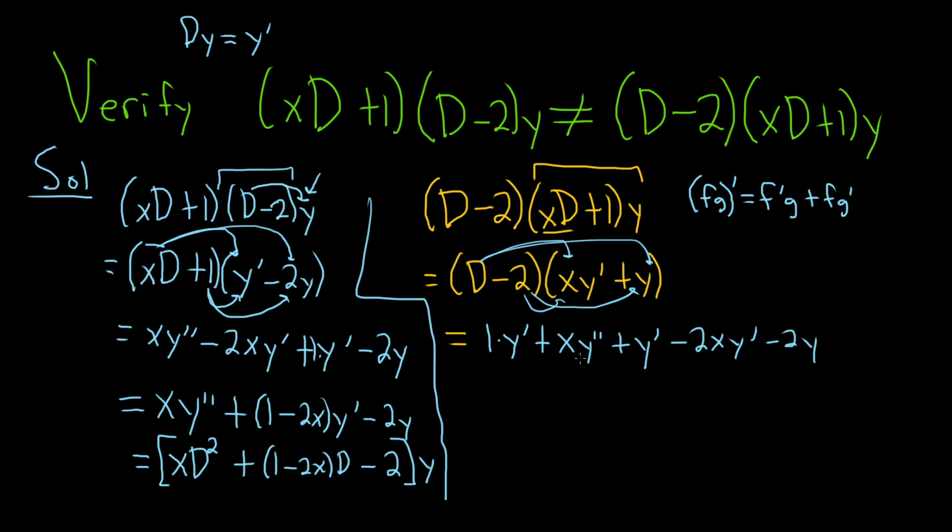Let's see if we can combine like terms here. I'm going to write this one first. So this is xy double prime. And there's 2y primes here, right? So I'm going to write this as plus 2y prime. It's y prime plus y prime and then minus 2xy prime and then minus 2y.